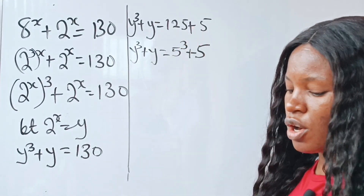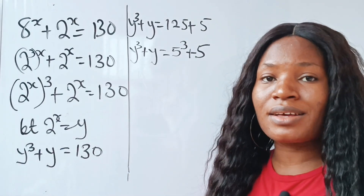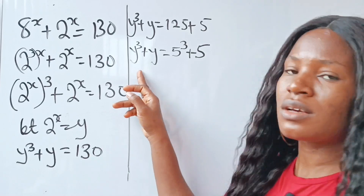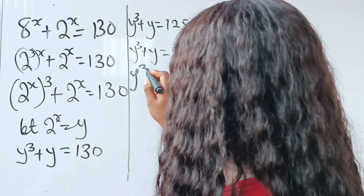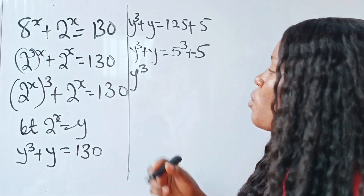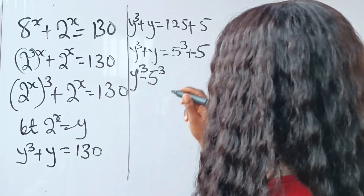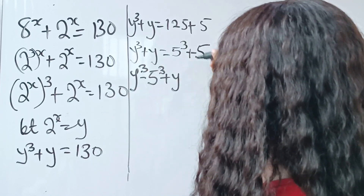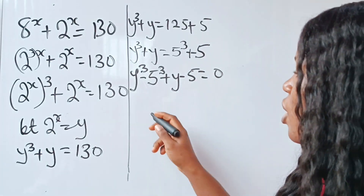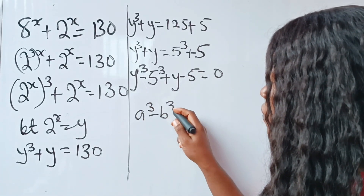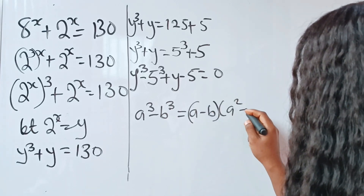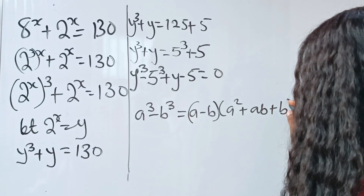Now let's shift everything to the other side, collecting like terms at once. I'm going to write y to the power of 3, bring 5 to the power of 3 over as minus 5 to the power of 3, then plus y, and bring 5 over as minus 5, equal to 0. Now recall that a to the power of 3 minus b to the power of 3 equals a minus b, multiplied by a squared plus ab plus b squared.